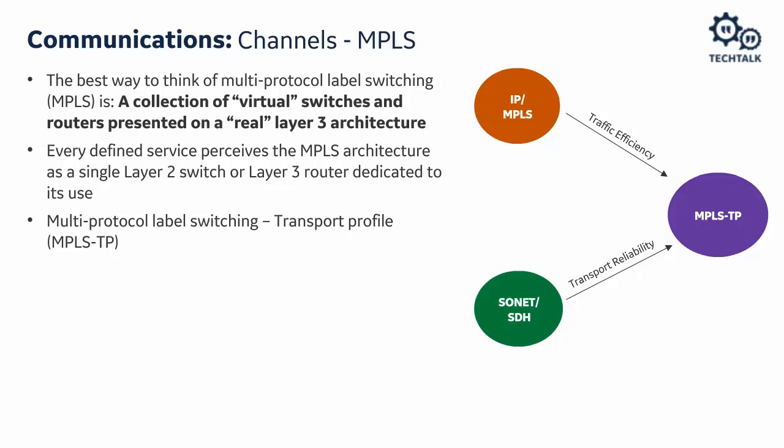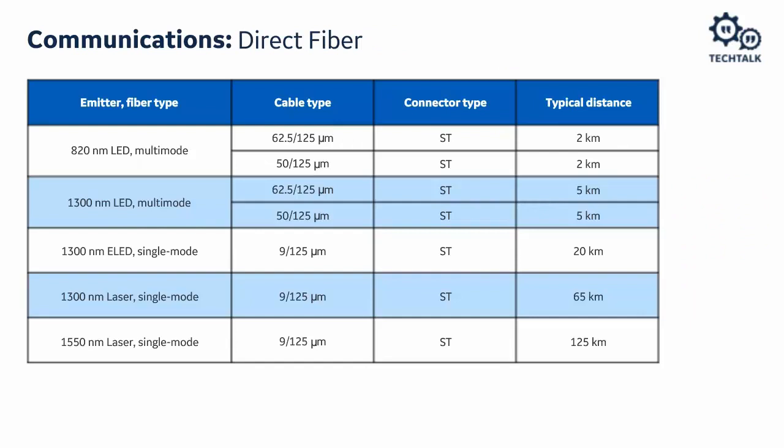This slide gives an idea of how far we can go with direct fiber. Depending on the type of fiber — multimode or single-mode — and the line driver — LED, ELED, or laser — we can go from about five kilometers to 125 kilometers. Direct fiber is still the most preferred channel because it is more secure and doesn't have problems you might expect with a multiplex channel, but unfortunately it is costly.